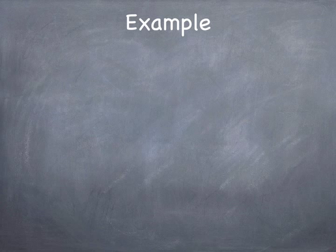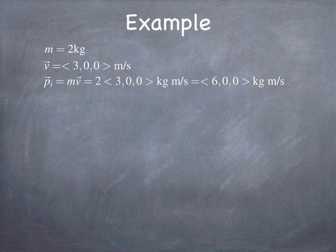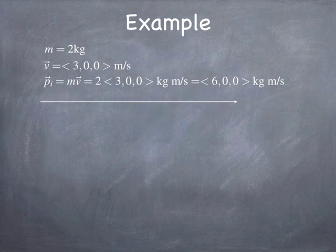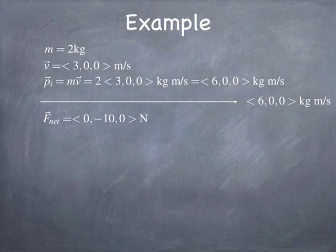Let's look at an example. We have a mass of 2 kilograms moving with an initial velocity of 3 meters per second, giving an initial momentum of 6 kilogram meters per second in the x direction — a vector pointing in the positive x direction with a magnitude of 6 kilogram meters per second. The force acting on this mass is negative 10 newtons, pointing in the negative y direction, for a time of one-tenth of a second.